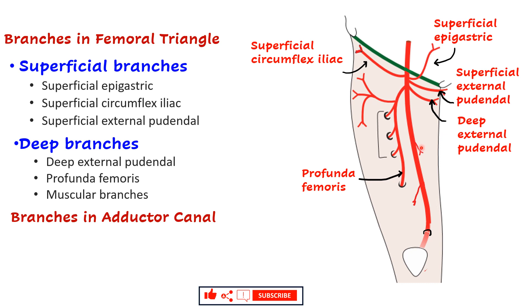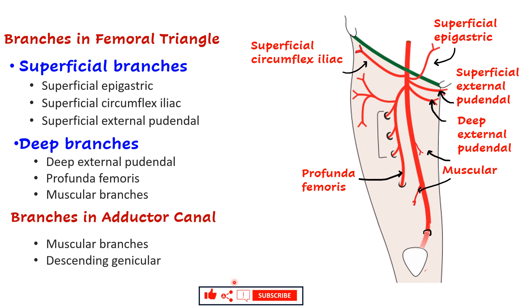In the adductor canal we have muscular branches and another branch known as the descending genicular branch, which participates in the anastomosis around the knee joint.